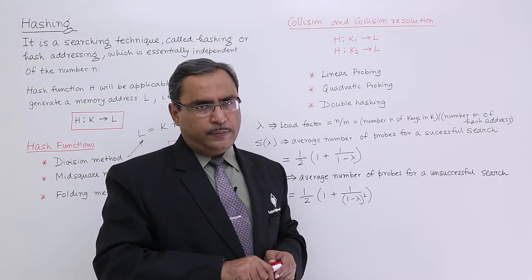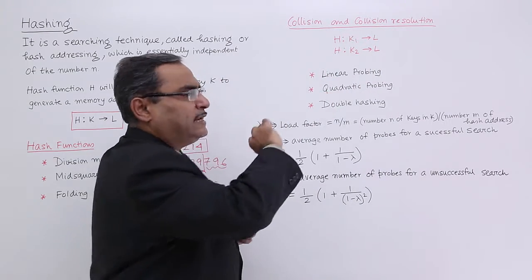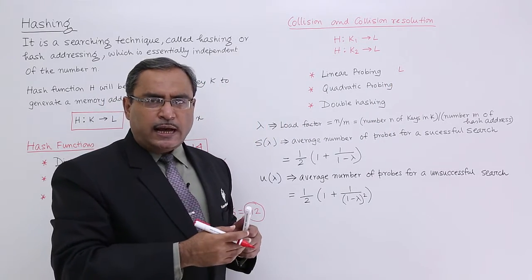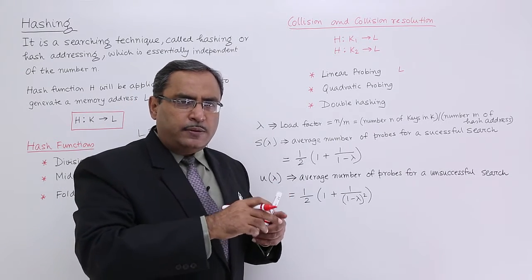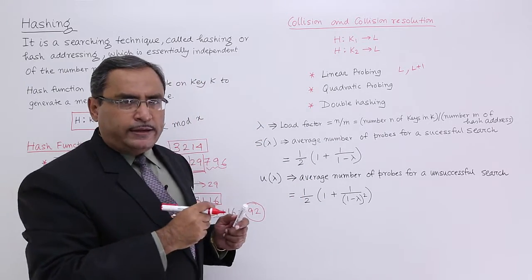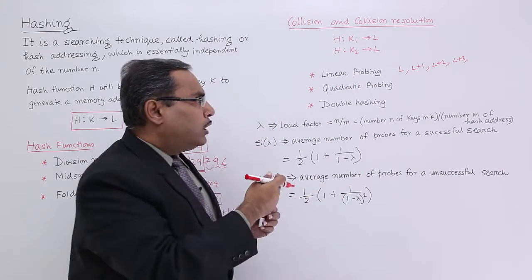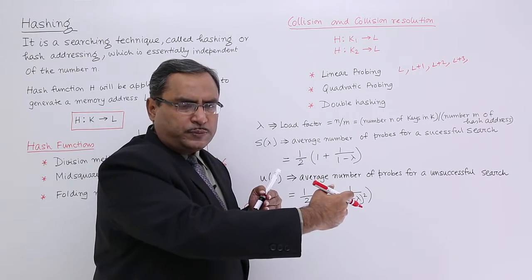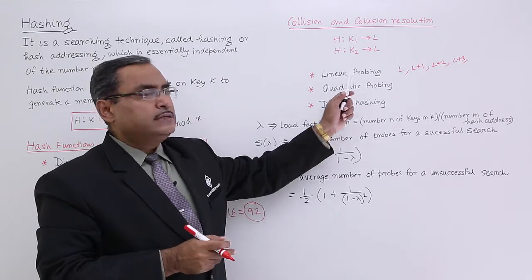Probing means searching. In case of linear probing, suppose on key K1 I apply hash function H and get location L. I first search for the L-th location. If another record is already stored there, I go to location L+1. If that is not vacant, I try L+2, then L+3, and so on. If I find any free space during this search, I store my record there. That is linear probing.